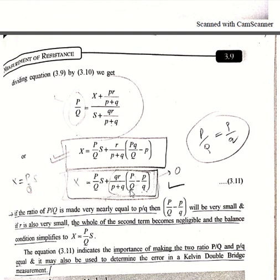So here in this lecture we have studied the Kelvin Double Bridge method, its practical operation, and the correction factor of this method. In the next lecture we will study the ohmmeter method for measurement of low resistance — that is the final fourth method. The lecture notes for this whole chapter will be provided on the college website. Till then, continue our lectures and stay healthy.